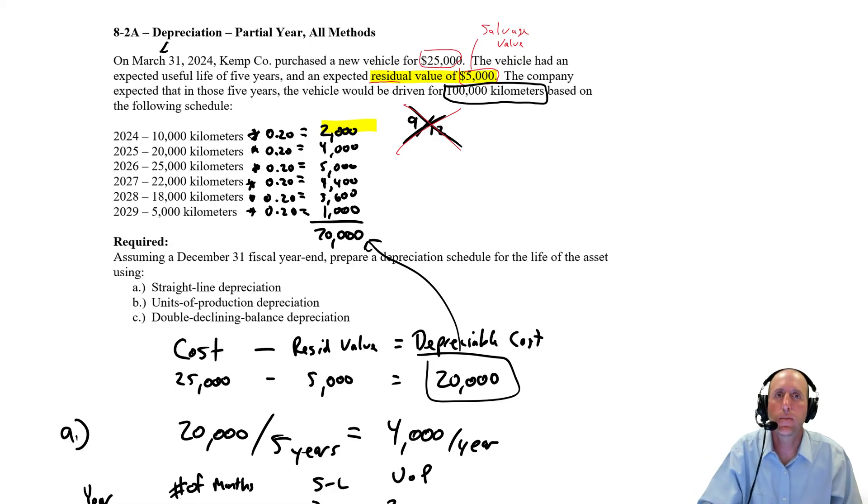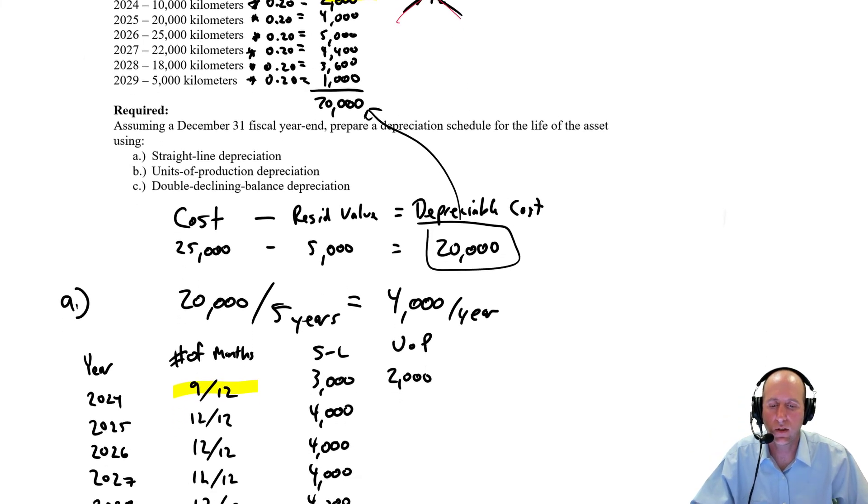Well, because time doesn't matter for units of production. It's all about kilometers. It doesn't matter if you drove all the kilometers in January, right? It's just depreciation is by the kilometer, not by the month. So we don't have to worry about 9/12 here. We just take those numbers.